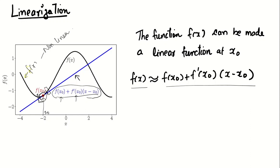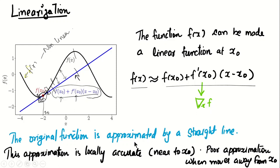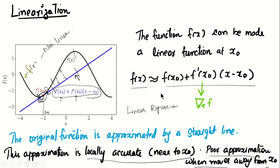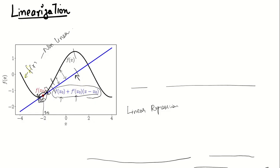When we move away from x₀, the difference between the line and the function grows larger — you cannot say the line is equivalent to that part of the function. But in a close area to x₀ these two are almost similar. The original function is approximated by a straight line and the approximation is locally accurate near x₀, with greater error as we move away. This kind of linearization is applied in linear regression in machine learning. That is all about the Hessian and linearization — thank you.